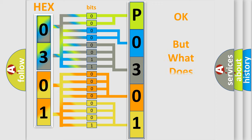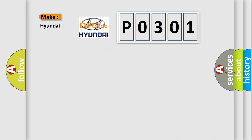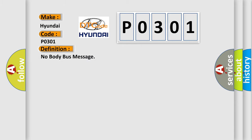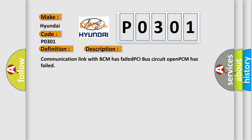We now know how the diagnostic tool translates received information into a more comprehensible format. The number itself does not make sense unless we assign meaning to what it actually expresses. So, what does the diagnostic trouble code P0301 interpret specifically for Hyundai car manufacturers? The basic definition is: No body bus message. The short description is: Communication link with BCM has failed, PCI bus circuit open, PCM has failed.